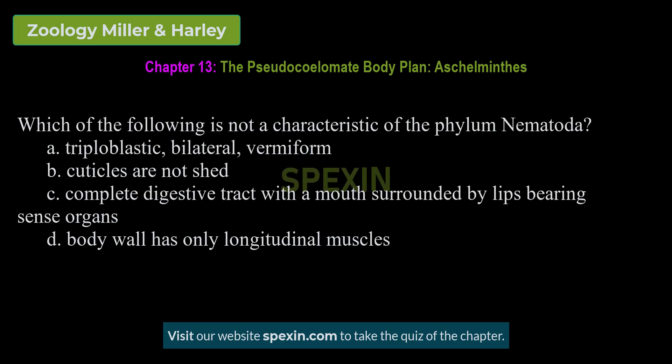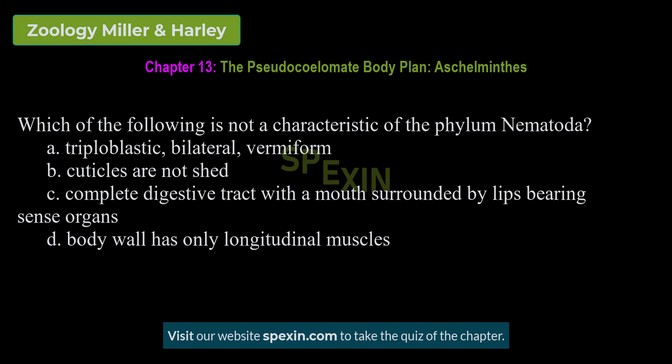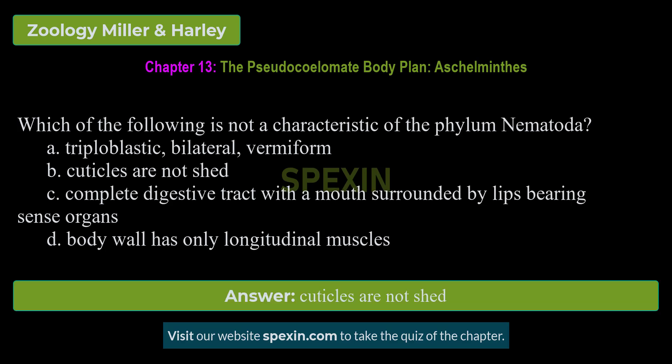Which of the following is not a characteristic of the phylum Nematoda? A. Triploblastic, bilateral, vermiform. B. Cuticles are not shed. C. Complete digestive tract with a mouth surrounded by lips bearing sense organs. D. Body wall has only longitudinal muscles. Correct answer: Cuticles are not shed.